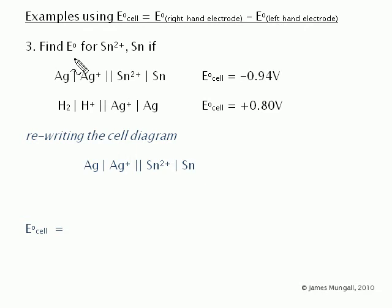This question says find E° for Sn²⁺/Sn if a silver-tin cell has a voltage of -0.94 volts and a hydrogen-silver cell has a voltage of +0.80 volts.